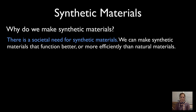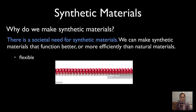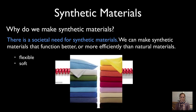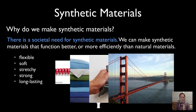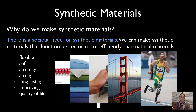So why do we make all of these synthetic materials? The simple answer is that we have uses for them — there's a societal need. We can make synthetic materials that function better or more efficiently than natural resources. We can give them different properties that natural resources may not have: we can make them flexible, soft, stretchy, long-lasting, and strong. We can even improve our quality of life with synthetic materials.